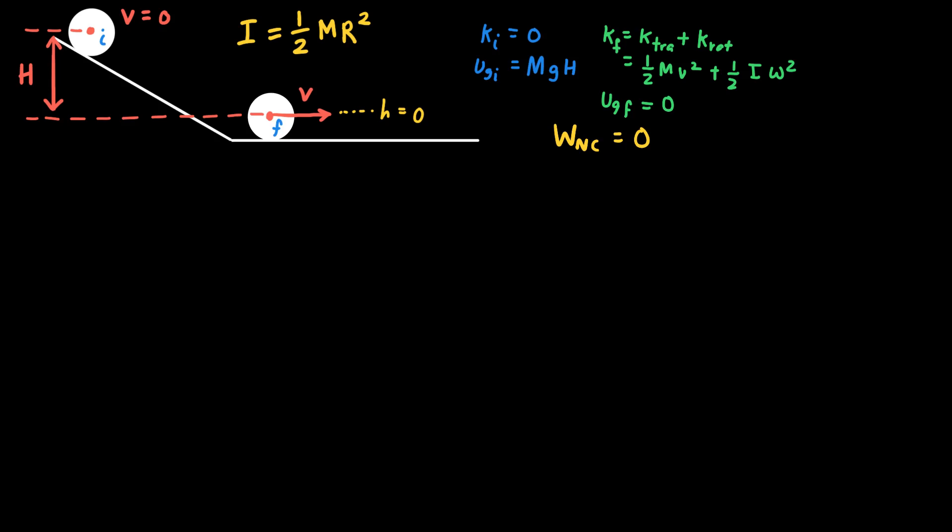And so now to set up this conservation of energy equation, what I'll do is I'll equate the initial energy to the final energy. Initially, the energy is just mgh, because the kinetic energy term was zero. And then in the final case, we have one-half mv squared plus one-half i omega squared. And ultimately, the goal is to get an expression for the linear speed v, which is inside of that first term for the final energy.